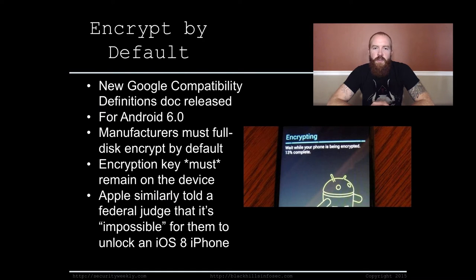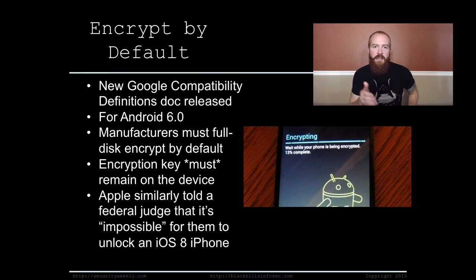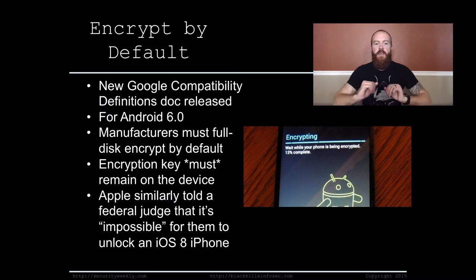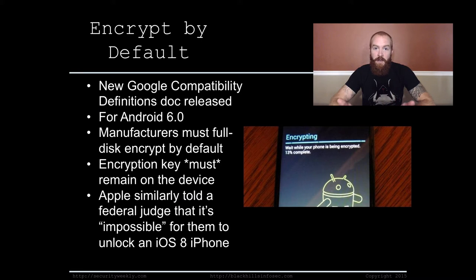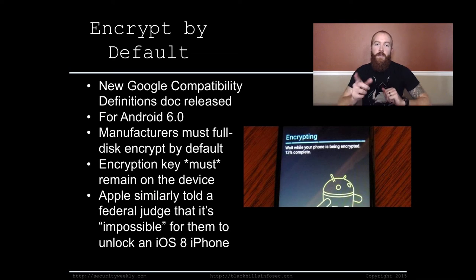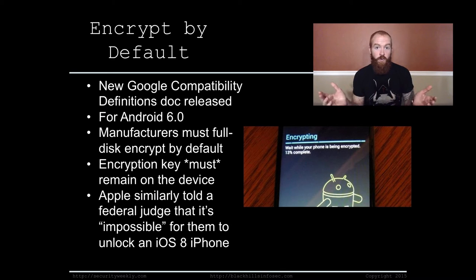Let's talk about Google and some announcements they've made for Android moving forward. They released a doc that basically defines that any Android device moving forward, starting with Android 6.0, has to have encryption enabled on the device by default. So all manufacturers building phones for Android 6.0 have to install full disk encryption by default. What's cool is that in the doc, they specify that the encryption key must remain on the device itself, so Google, the FBI, or anyone will not be able to decrypt the phone without the user's passcode.